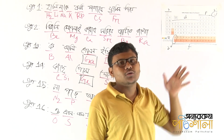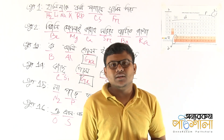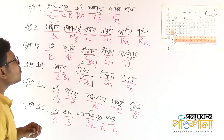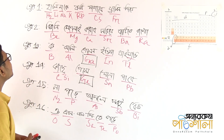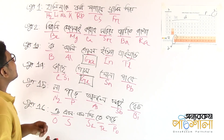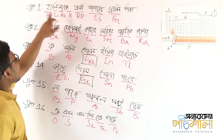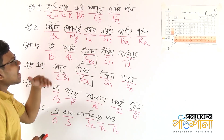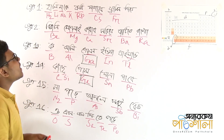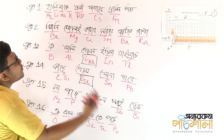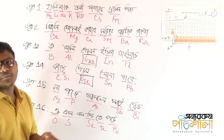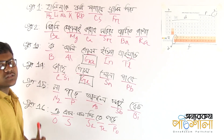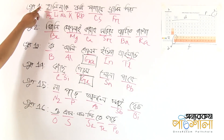Each group has a name. Group 1 is known as the alkali metals. Group 2 is known as the alkaline earth metals. Group 17 elements — what do they represent? They are called halogens.